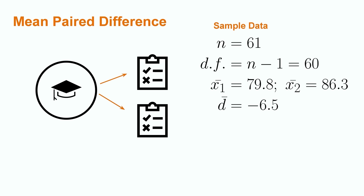The average score on the first exam is 79.8 and the average score on the second exam is 86.3, yielding x bar 1 and x bar 2 respectively. This gives us an average difference d bar of negative 6.5, indicating that x bar 2 is greater than x bar 1. The standard deviation of the differences for each individual student is 13. Finally, the professor wants to find a 95% confidence interval for these results, yielding a C of 0.95.